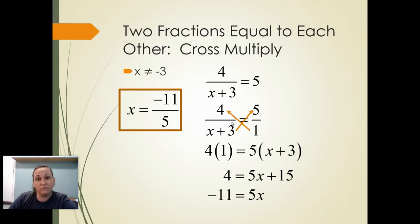But there will be some times where you get a final answer, and your final answer is also a restriction. So it's not really a final answer. Remember that we called those extraneous solutions. An extraneous solution is something that you think is an answer to the problem, but then you find out it actually isn't. So just be on the lookout for this.